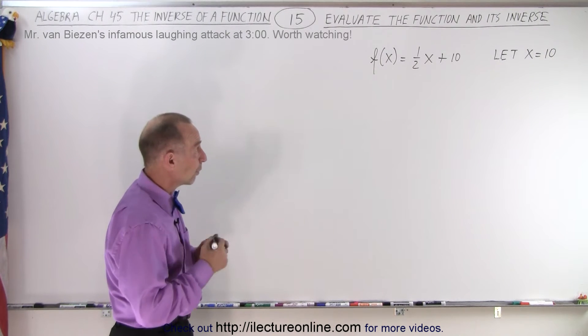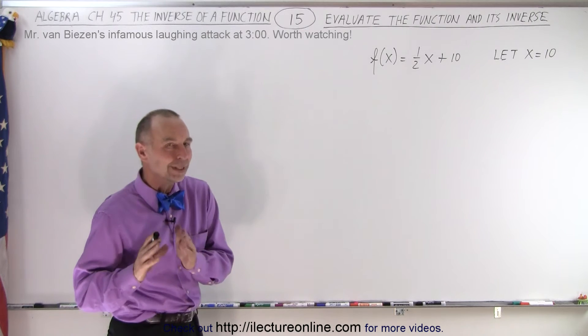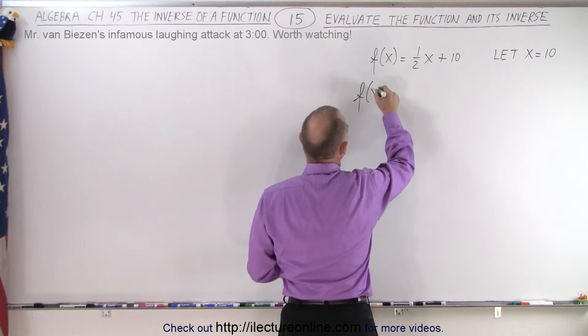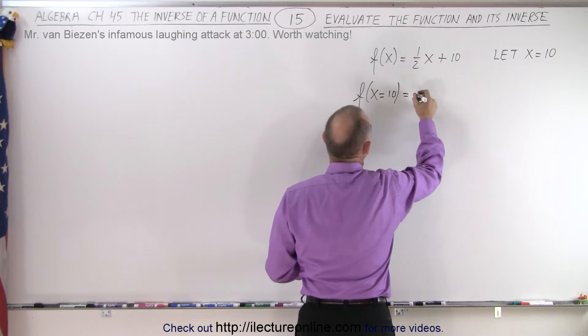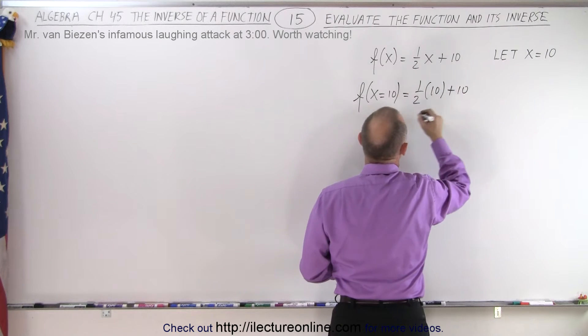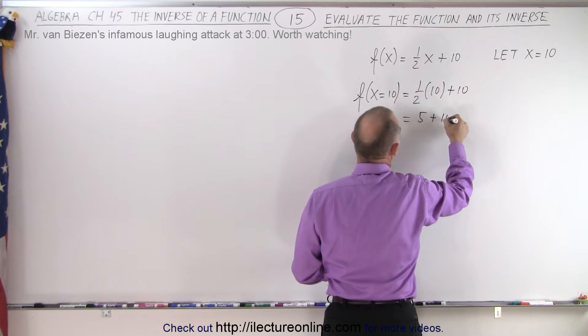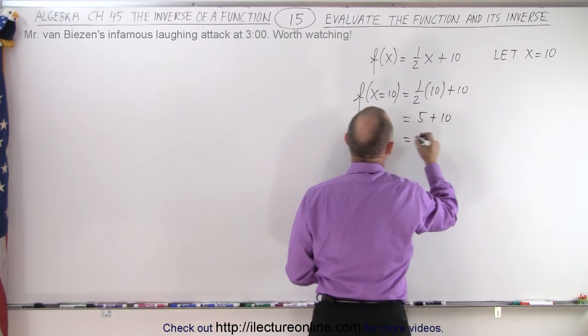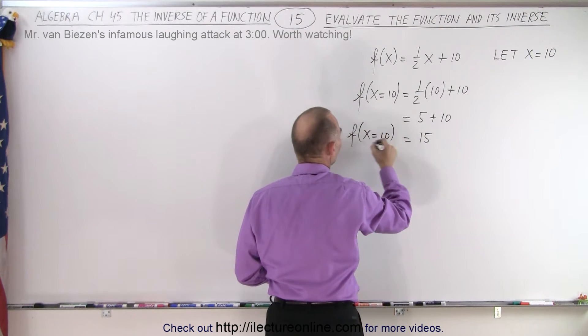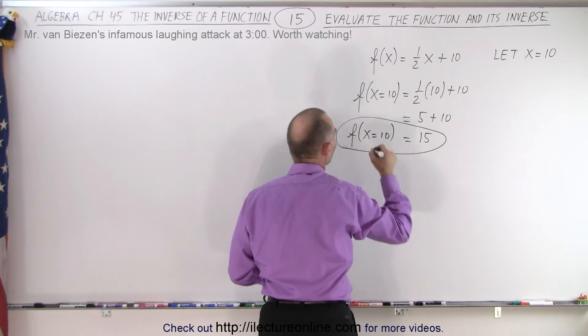Here we have f of x equals 1 half x plus 10, and we're going to let x equals 10. So f when x equals 10 is equal to 1 half times 10 plus 10, which is 5 plus 10, which is 15. So the original function evaluated when x equals 10 is equal to 15.